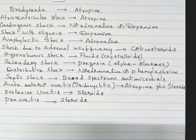Bradycardia — atropine. AV block — atropine. Cardiogenic shock — noradrenaline or dopamine. Shock with oliguria — dopamine. Anaphylactic shock — adrenaline (not noradrenaline). Adrenal insufficiency shock — corticosteroids. Hypovolemic shock — crystalloids. Secondary shock — prazosin (alpha blockers, important — don't get confused). Distributive shock — noradrenaline or phenylephrine. Septic shock — broad-spectrum antimicrobials. Acute anterior uveitis — atropine plus steroids. Posterior and pan uveitis — only steroids.